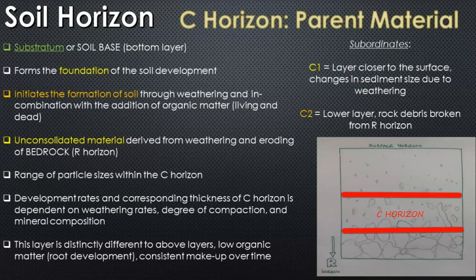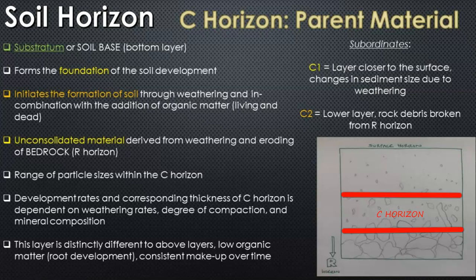The C horizon is broken into two sub-layers: C1 and C2. The C1 layer is the top half of the C horizon, closer to the B horizon. Some leaching may occur into this area, but the sediment size is small enough to still have some pore spaces for movement of water percolating down to the water table. The C2 layer has larger rock debris and parent material that gets increasingly larger until you reach the R horizon boundary — that consolidated, solid piece of rock that the C horizon originally weathered from.